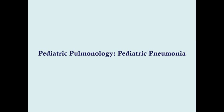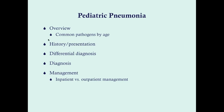Greetings again. This will be a talk on pediatric pneumonia. We will do a quick overview. We'll talk about the common pathogens by age. The test seems to be really obsessed with this, and so even though we tend to treat pediatric pneumonia empirically, it's good to know what some of these pathogens are and what tends to predominate based on age. We'll talk about how these children tend to show up, how you can differentiate this based on those symptoms, how we go about diagnosing this, the most accurate way, and then how we manage this.